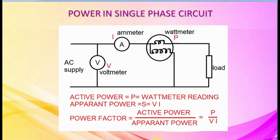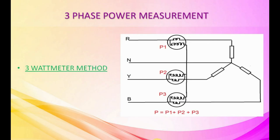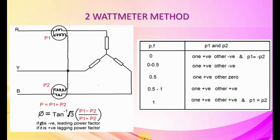Power in single-phase circuit: ammeter measures current, voltmeter measures voltage, and watt meter reading shows active power. Multiplying ammeter and voltmeter readings gives apparent power. Power factor is active power by apparent power. For three-phase power measurement, three methods are used: 1. Three watt meter method — sum of three watt meter readings gives total power. 2. Two watt meter method — sum of both meter readings gives total power; using the equation tan phi equals root 3 times (P1 minus P2) by (P1 plus P2), we can find angle phi and then power factor cos phi.